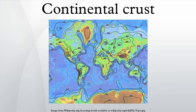The continental crust is the layer of igneous, sedimentary, and metamorphic rocks that forms the continents and the areas of shallow seabed close to their shores, known as continental shelves. This layer is sometimes called sial because its bulk composition is more felsic, or granitic, in contrast to the oceanic crust, called sima, whose bulk composition is more mafic or basaltic rock.